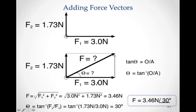That's how we find the magnitude of the resultant vector using the hypotenuse equation from the Pythagorean theorem. We take the X component and square it — 3 Newtons squared — then the vertical Y component, 1.73 Newtons, and square it. Take the square root, and we get 3.46 Newtons. That is the magnitude of this resultant force vector.